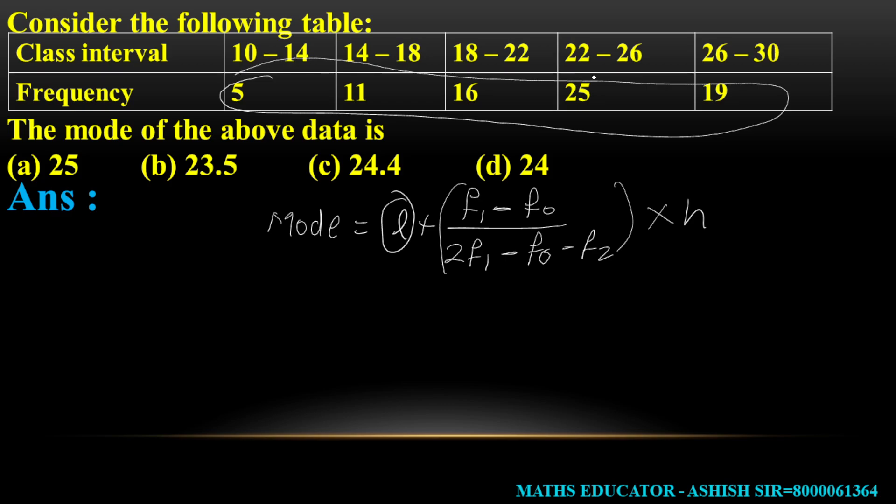The highest frequency is 25, so 22 to 26 is the modal class. We will select the modal class. F1 is 25, and the lower limit of the modal class is 22. So L equals 22.